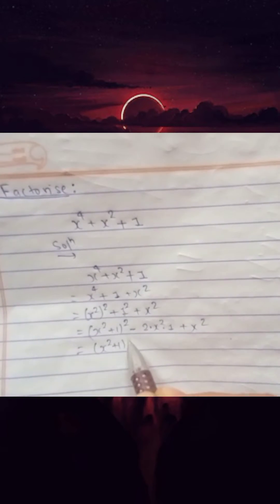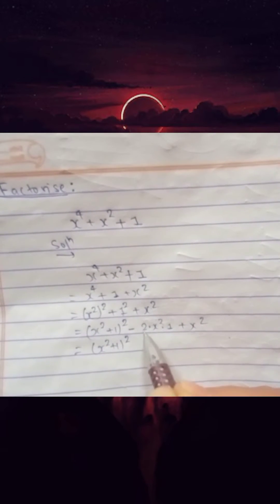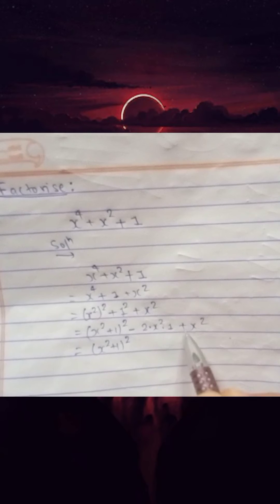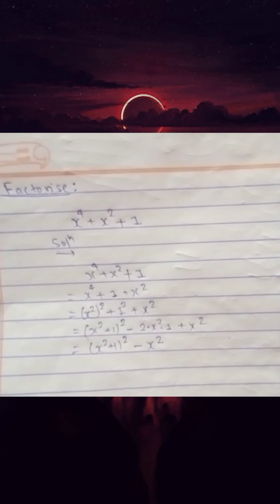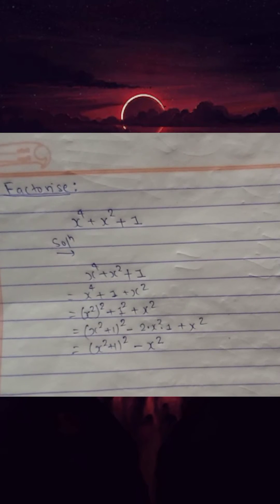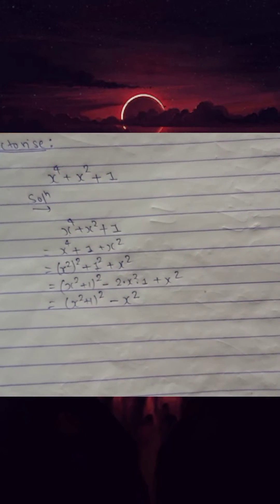The next step, write it just as it is. You can see here 2x square minus 2x square plus x square minus 2x square and x square is minus x square. Now it seems easy here.